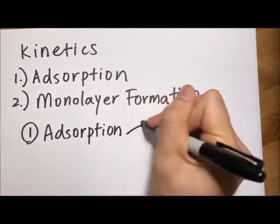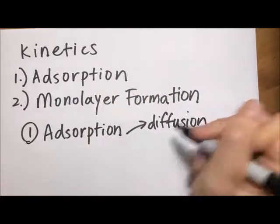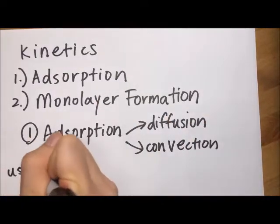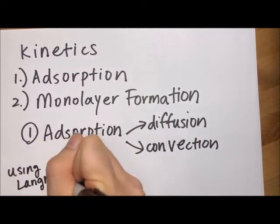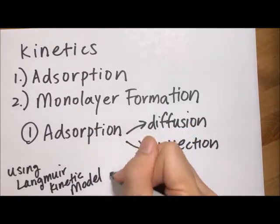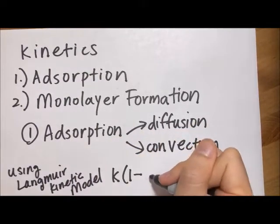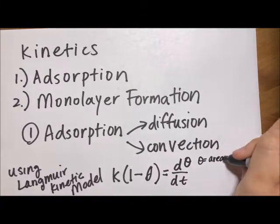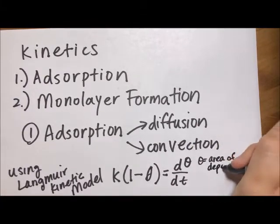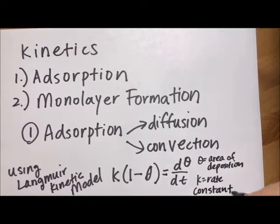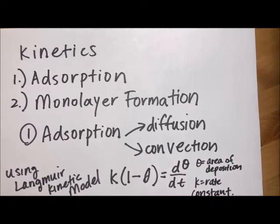With adsorption, depending on the technique used to pattern and assemble the monolayers, adsorption is largely dictated by diffusion and convection. Parameters that researchers need to adjust for are proportional to the surface area that they are trying to cover, where they change things like the amount of time the solution comes into contact with the substrate, or concentrations of the solution. A simplified equation can be used to model the kinetics of adsorption using the Langmuir kinetic model, where theta is the area of deposition and k is the rate constant.